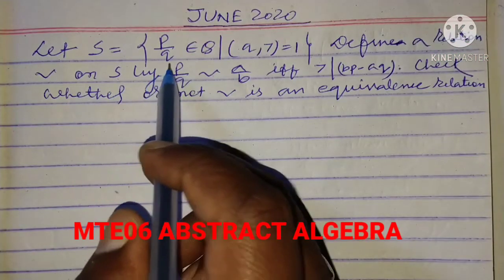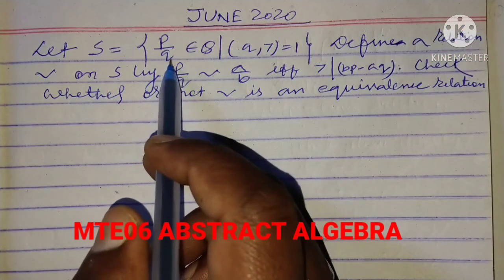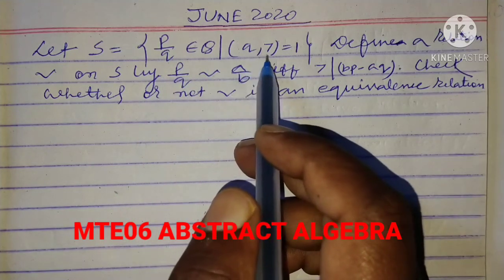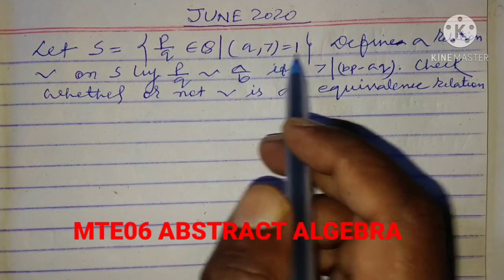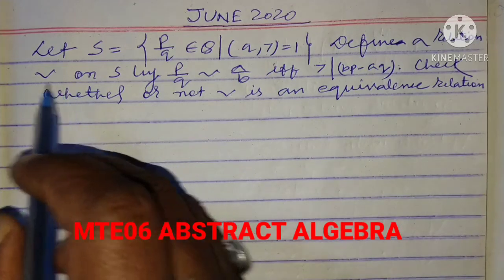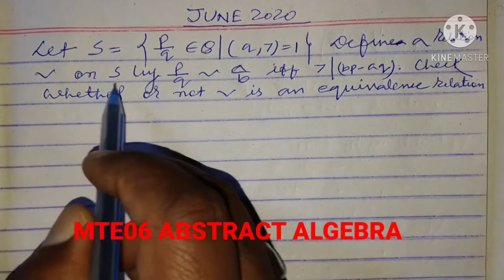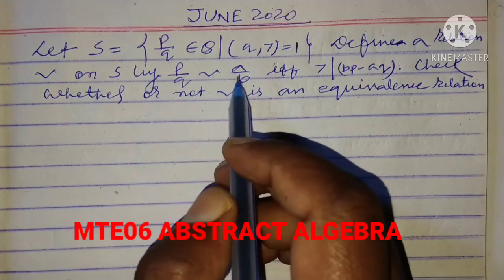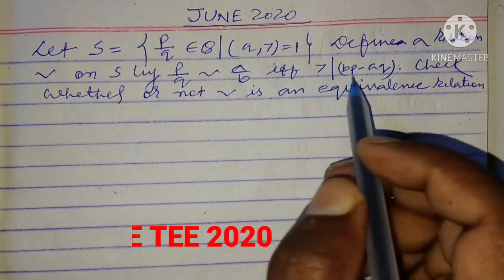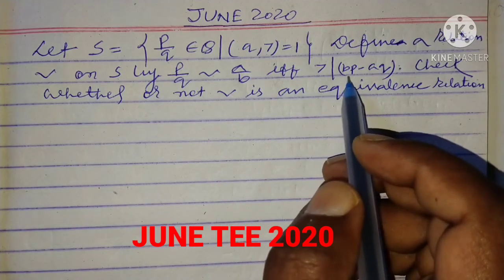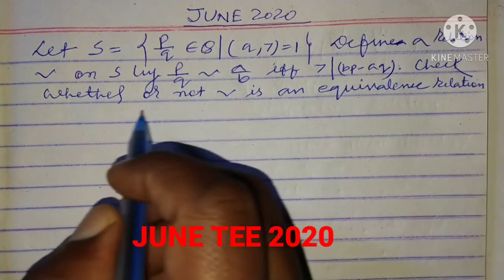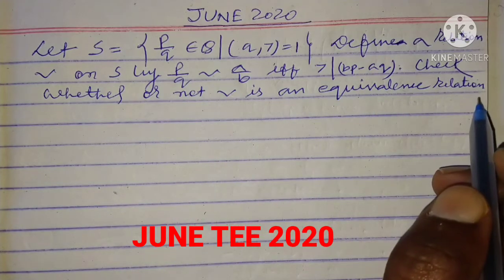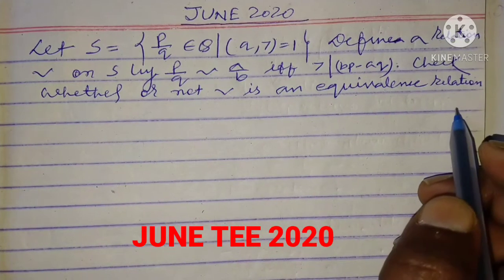Let S be the set of all rational numbers p/q such that gcd(q, 7) equals 1. Define a relation equivalence on S by: p/q is related to a/b if 7 divides bp minus aq. Check whether or not the relation is an equivalence relation.